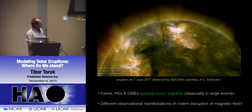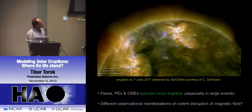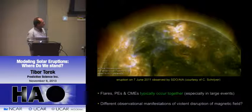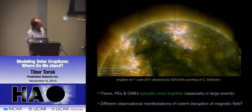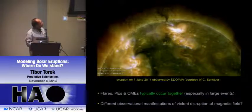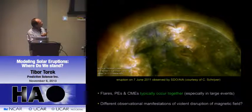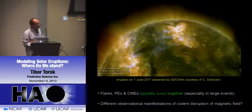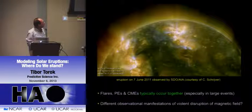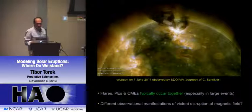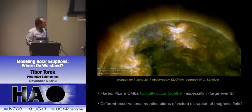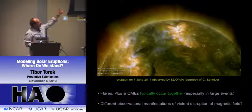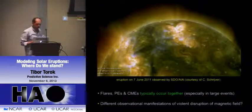Another thing to note is that these three types—flares, prominence eruptions, and CMEs—at least in the larger events, always occur together. They are not independent from each other. Here's an example: this dark stuff is the prominence, you can see how much it expands, and here you see the flare loops coming after this filament eruption. There was also a CME, which you don't really see in this limited field of view.